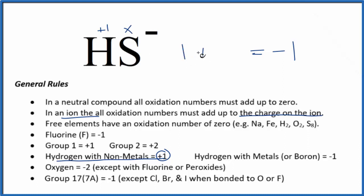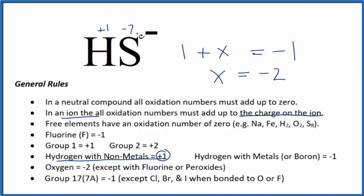One plus x equals negative one. We'll subtract one from each side, and we end up with negative two. So the oxidation number on the sulfur here is going to be negative two. So if we add these up — negative two and positive one — that equals negative one, the charge on the entire hydrogen sulfide ion.